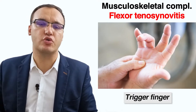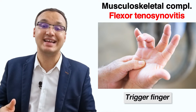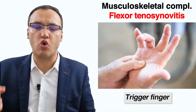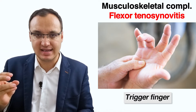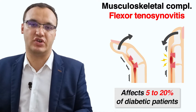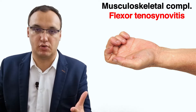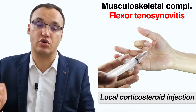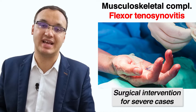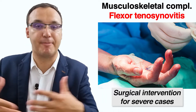The third complication is flexor tenosynovitis, more commonly known as trigger finger. Patients complain of a catching sensation or locking phenomenon associated with pain in the affected finger. It affects approximately 5 to 20% of diabetic patients and may involve multiple fingers. The initial treatment is injecting local corticosteroids into the tendon sheath; if unsuccessful, a minor hand surgery can provide permanent relief.